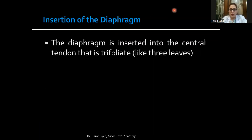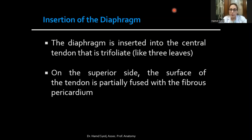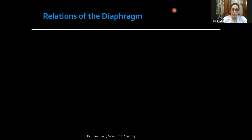The insertion of the diaphragm is the central tendon. The central tendon is in the shape of three leaves, also known as folia — a trifoliate representation. On the superior aspect, the surface of the tendon is partially fused with the fibrous pericardium.